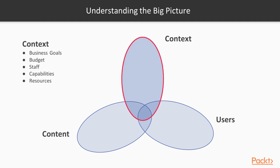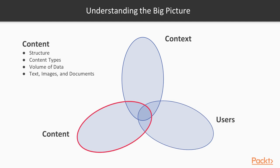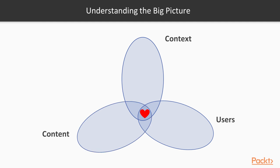When we think about context, think about your own organization — there are business goals, budget, staff, capabilities, and resources. That's the context for your information architecture project. Then there are also the users. We need to understand through research their demographics, habits, needs, tasks, and experience. How confident are they using the technology? Are they able to do a search, are they able to investigate? Then the third component is content. When we combine all of these together, we're able to create the big picture.